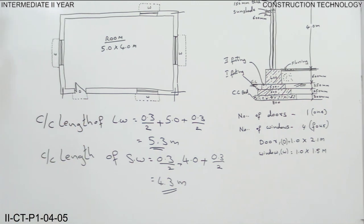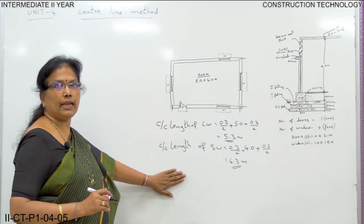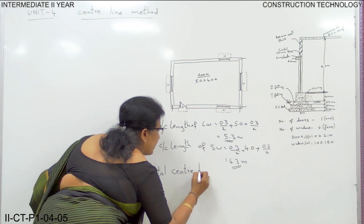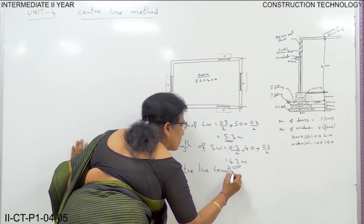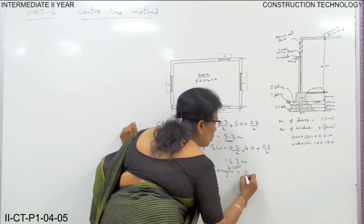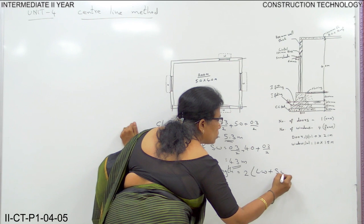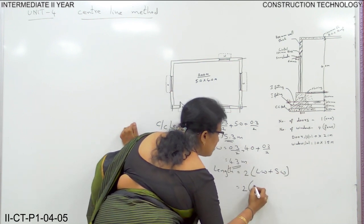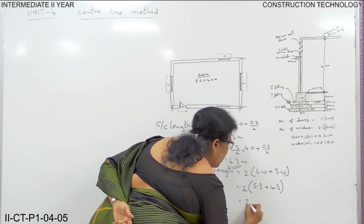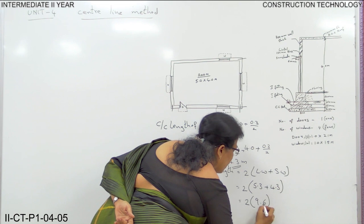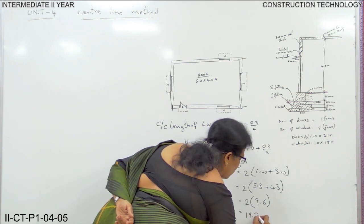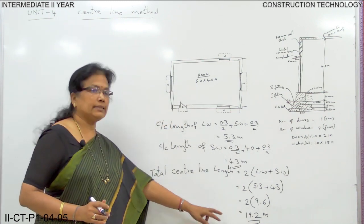For the centre line method, we need to calculate the total centre line length. Total centre line length: there are only 2 long walls and 2 short walls, so it is 2 × (long wall + short wall) = 2 × (5.3 + 4.3) = 2 × 9.6 = 19.2 meters. This is the total centre line length.